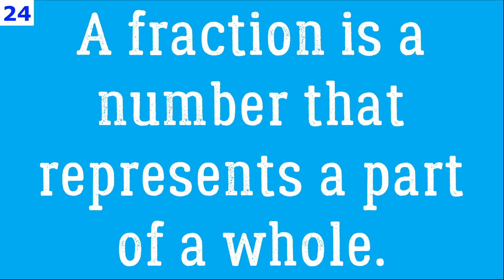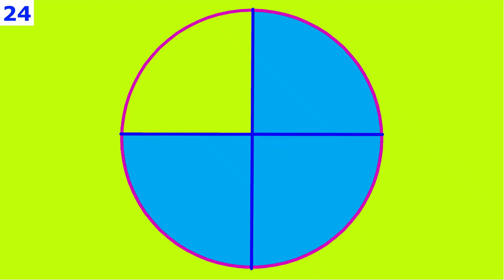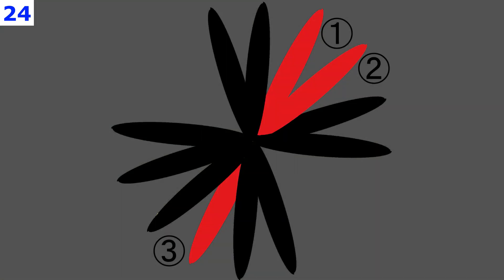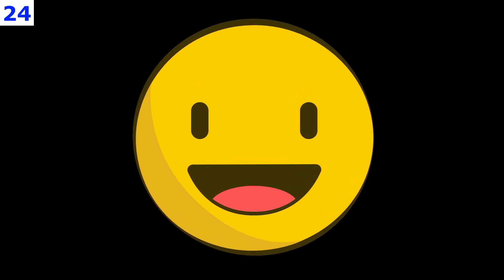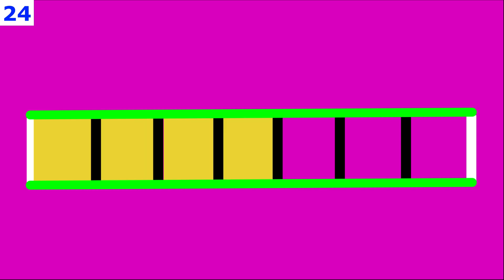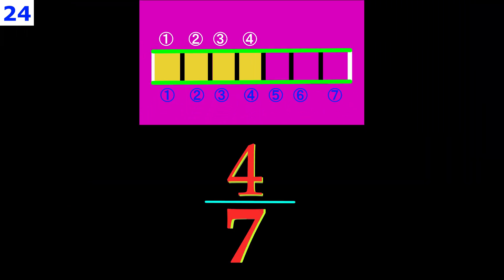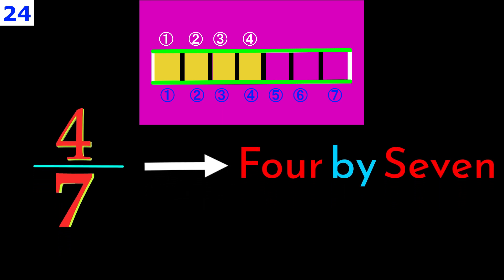A fraction is a number that represents a part of a whole. Look at the given figure in front of you. A strip has been divided into seven parts. Out of these seven equal parts, four parts have been shaded. Clearly, the shaded portion represents four-sevenths. Read as four by seven. So here, four by seven is a fraction — a fractional representation.